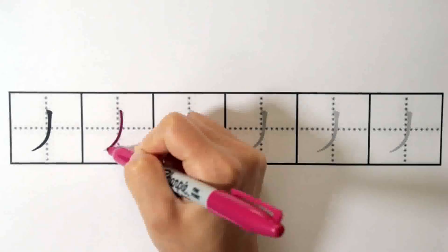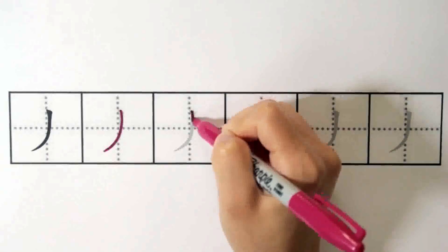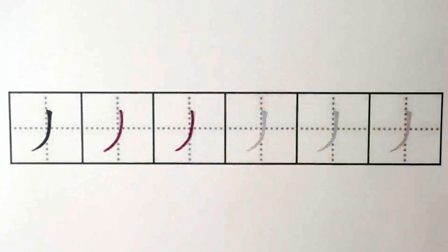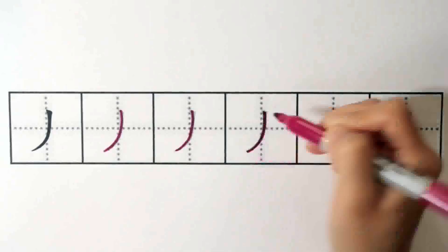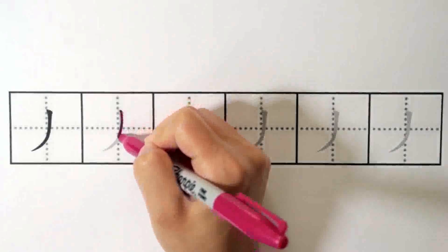Okay, our first stroke today is called pie, or downward left. And this is what it looks like. It's written from top right to downward left. Remember just one single stroke, no back and forth, and no writing it backwards. Try tracing it a few times.